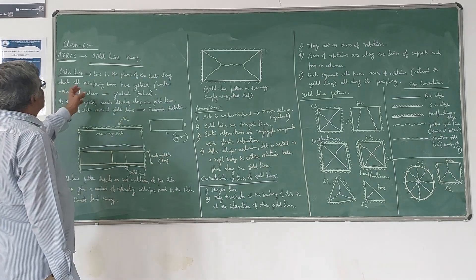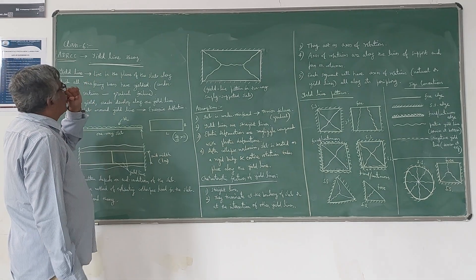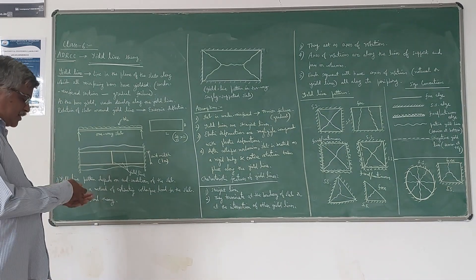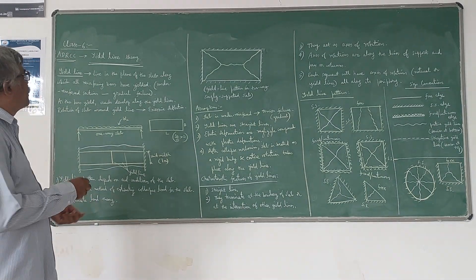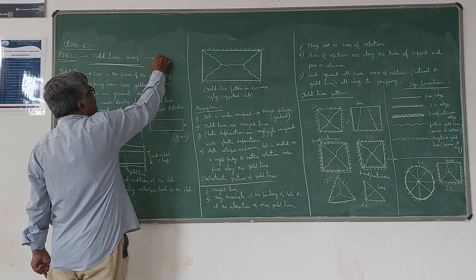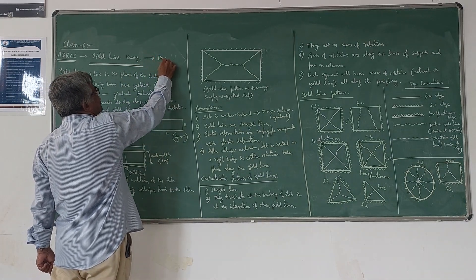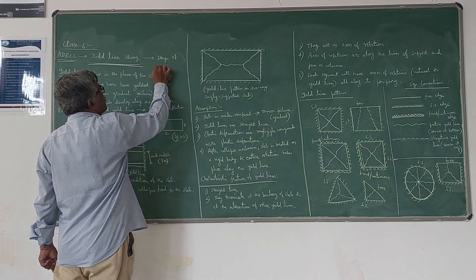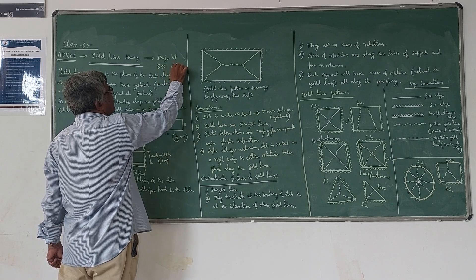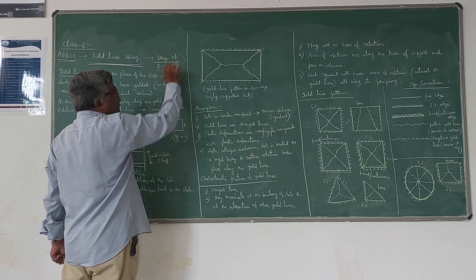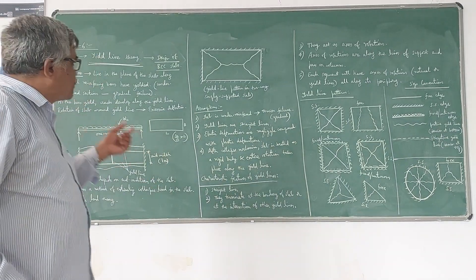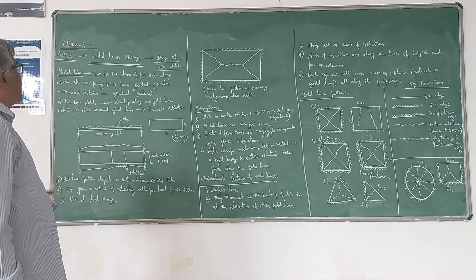In this class we will discuss about yield line theory analysis, which is very popular in the design of RCC slabs. We can always find out the collapse load in the case of RCC slabs using this yield line theory.